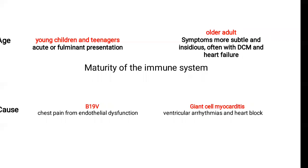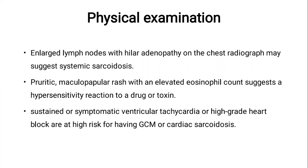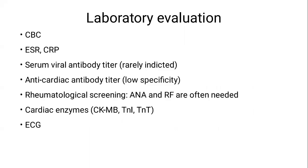Physical examination may give you clues about the etiology. If you find enlarged lymph nodes with hilar lymphadenopathy, reticulonodulation on the chest radiograph, or bibasal crackles, you should think of systemic sarcoidosis. If you see periuretic maculopapular rash over the trunk, arms, and legs, together with elevated eosinophil count and recent exposure to drugs or toxins, think of hypersensitivity reaction. A patient with rapidly progressive heart failure and arrhythmia — either ventricular tachycardia or heart block — should make you think of giant cell myocarditis or cardiac sarcoidosis.